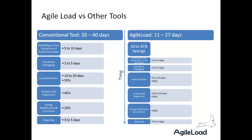How does Agile Load compare to other tools? We compared it to a very well-established commercial tool and found 30–45% savings, with many of those savings in modelling user transactions — capture and generation of scripts — and simulation debugging. Agile Load has the ability to compare captured traffic with generated traffic and highlight areas that may need to be addressed in the script, allowing you to quickly produce a correct and accurate script. The lightweight injector can be deployed simply and easily using any cloud infrastructure or machines in your data centre.